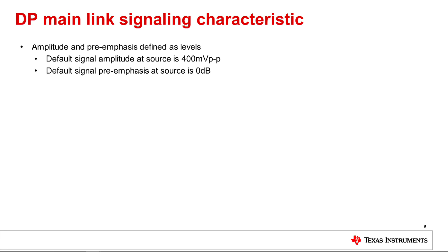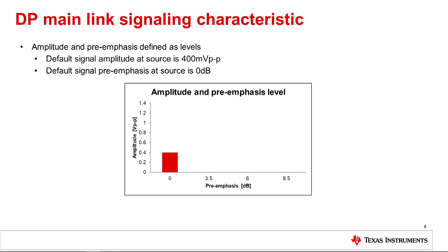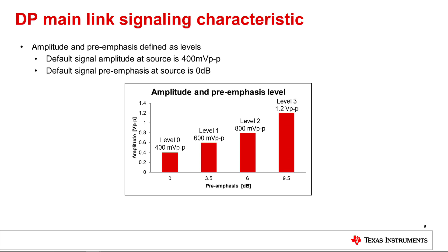DP uses an LVDS signaling protocol. It is an AC coupled 100 ohm differential signaling interface. On the source side, the transmitter provides both amplitude and pre-emphasis control. The transmitter must support level 0, level 1, and level 2 amplitude and pre-emphasis control, while level 3 is optional. The default signal amplitude at the source is 400 millivolts peak to peak, and the default pre-emphasis level is 0 dB.